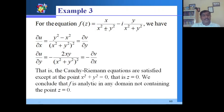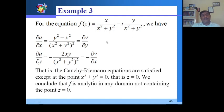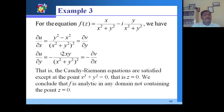First we compute the partial derivative ∂u/∂x using the quotient rule: take the denominator squared, differentiate the numerator, minus the numerator times the derivative of the denominator. Similarly for v = y/(x²+y²) using the quotient rule. We get ∂u/∂x = ∂v/∂y.